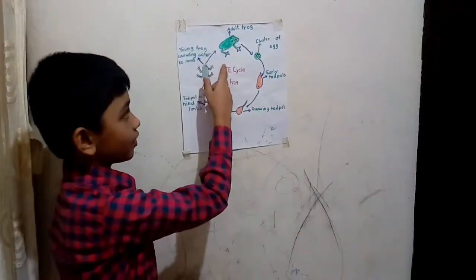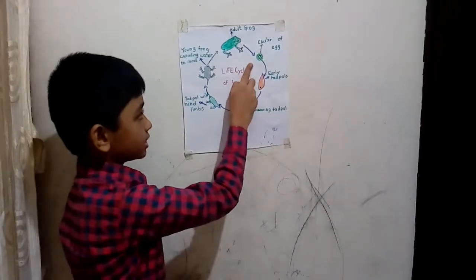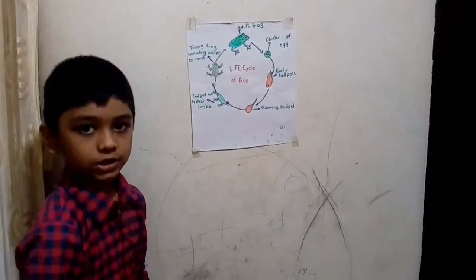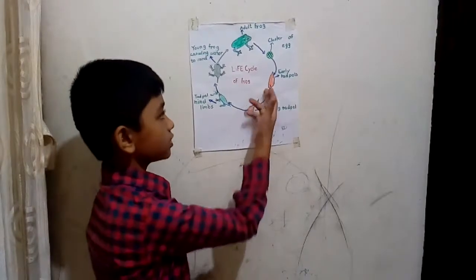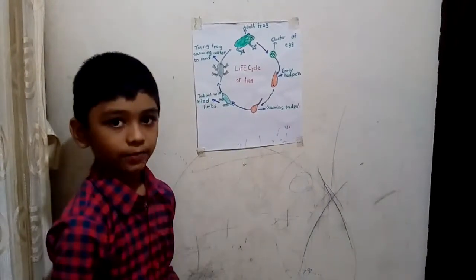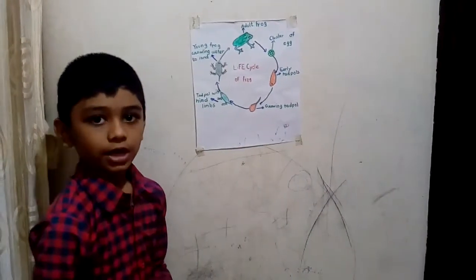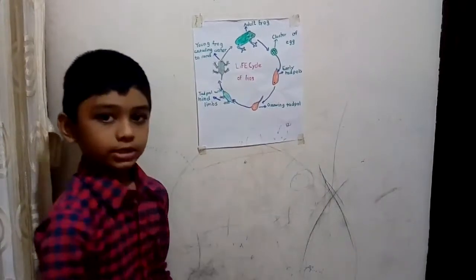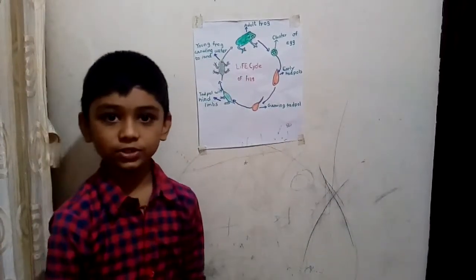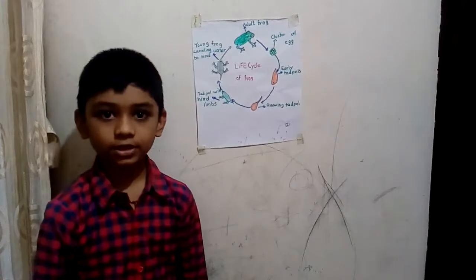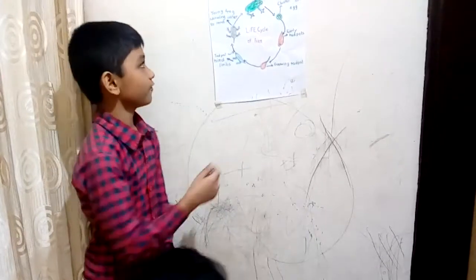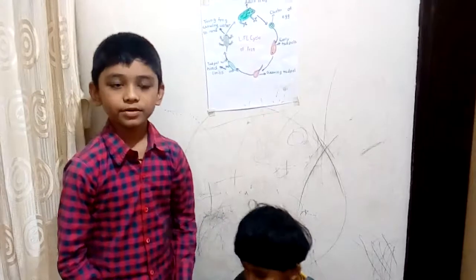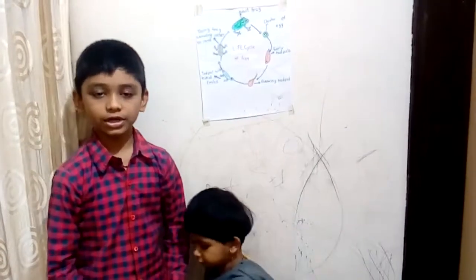The adult frog lays cluster of eggs. These cluster of eggs are called spawns. The spawns hatches into the tadpoles. After some time, they become the adult frog. This process is called metamorphosis. The parent frog also take care of their baby, for only a short time.